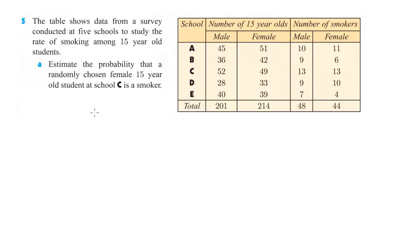Let's take a look at number 5. The table shows data from a survey conducted at 5 schools to study the rate of smoking among 15 year old students. Estimate the probability that a randomly chosen female 15 year old student at school C is a smoker. So we're choosing just the females.